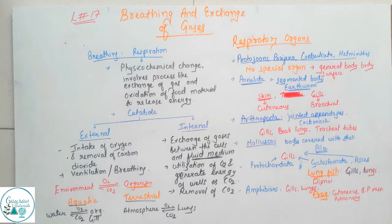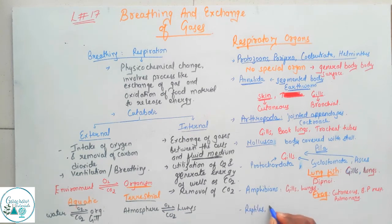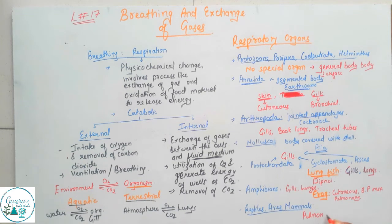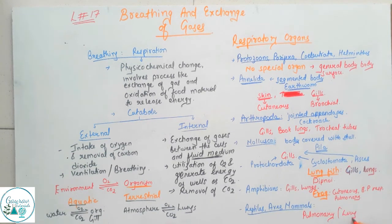If you talk about the most evolved group of organisms — reptiles, then aves, and the most superior, mammals — these three groups mostly respire through the pulmonary system, that is, through lungs.